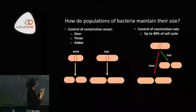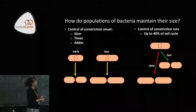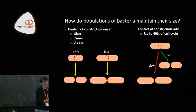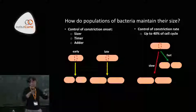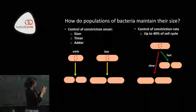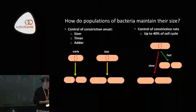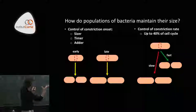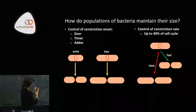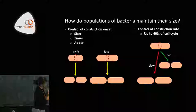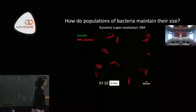All of these models had in common that they were thinking about setting the point at which the Z-ring or division machinery onsets — control of the onset of constriction. We wanted to think about control of the constriction rate itself. Why might this be interesting? It turns out that cells, and in particular Caulobacter, can spend up to 40% of their cell cycle in the constriction phase — a tremendously long part that was sort of thrown away in previous analyses. We wondered whether cells could use the strategy of dividing fast or slow in addition to deciding when to onset division.